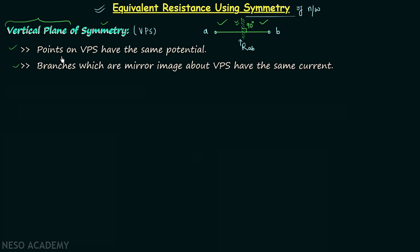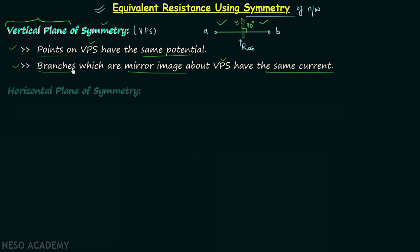Now understand two important points related to vertical plane of symmetry. First, whenever you have the vertical plane of symmetry, the points on the vertical plane of symmetry have the same potential — very important. Second, the branches which are mirror images about the vertical plane of symmetry carry equal currents. Remember these two points related to the vertical plane of symmetry.